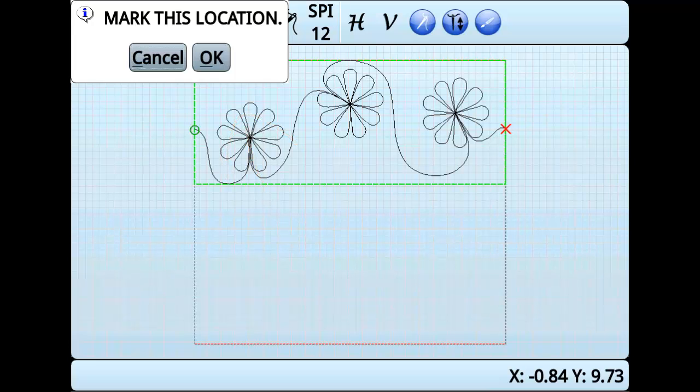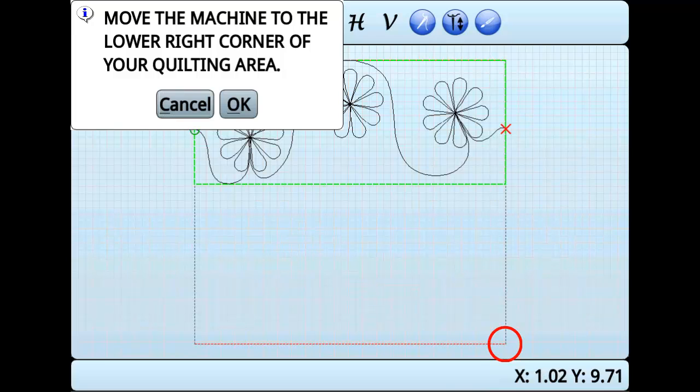Next, mark where the needle is on the quilt top with fabric chalk or something similar. Move the machine to the lower right corner and repeat.